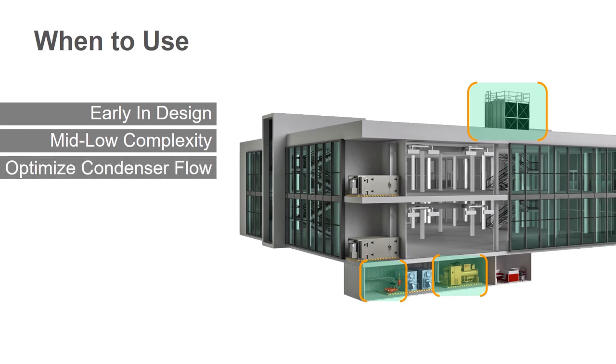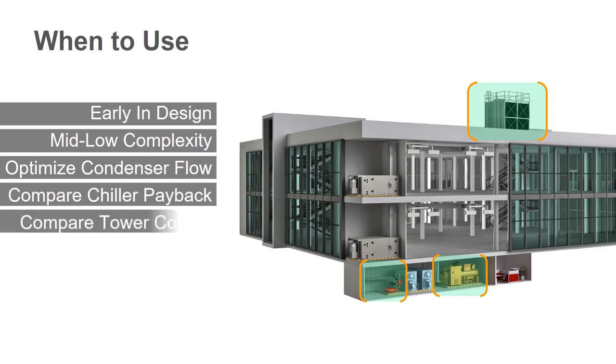What I'd use it for, obviously optimizing the condenser flow, we walked through that. I'd use the bid form to compare different chiller paybacks, different options. And then the last one, which we didn't talk about but is also available, is there's four different types of tower control inside the program. So you can iterate on those different tower controls and figure out which one works the best for your system type.